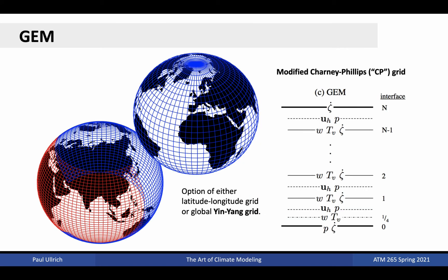The GEM model also makes use of a modified RLL grid, but one modified in a completely different manner. The GEM model uses what is known as a yin-yang grid, consisting of two identical subsections of an RLL grid that are twisted to cover the whole sphere. The red mesh is identical to a regular latitude-longitude grid, but is cropped poleward to 45 north and south, and cropped between 135 east and 135 west. The removed portion is then replaced with a twisted RLL section. The resulting mesh is again quasi-uniform, but requires remapping between the yin and yang grids. In the vertical, the GEM model uses a modified Charney-Phillips grid, where horizontal velocity and pressure are stored at half levels. The other variables are staggered, with theoretical considerations that make this arrangement desirable.